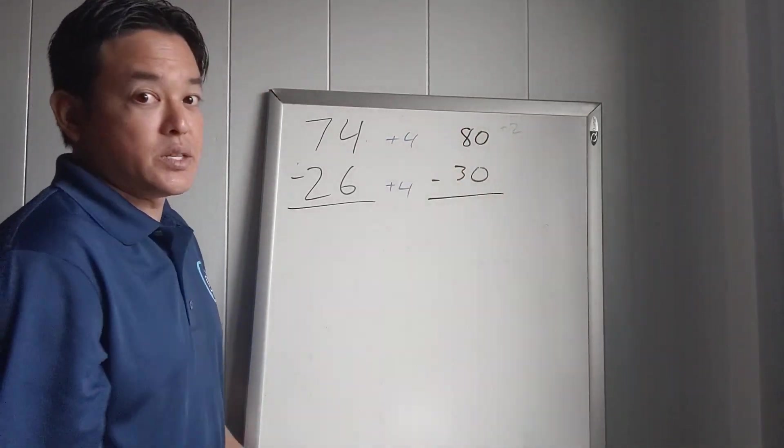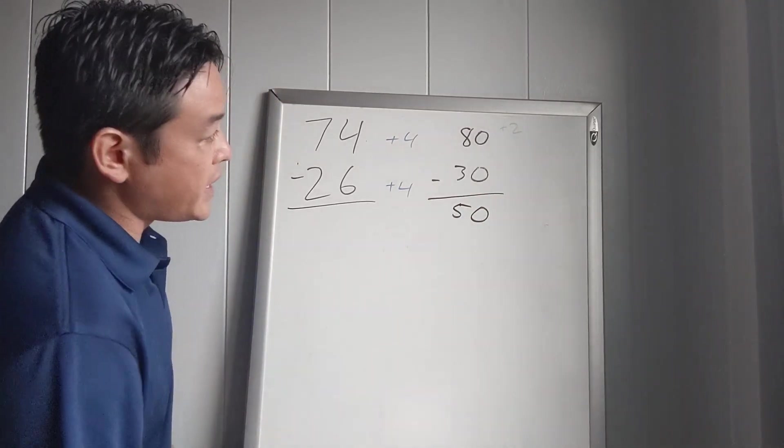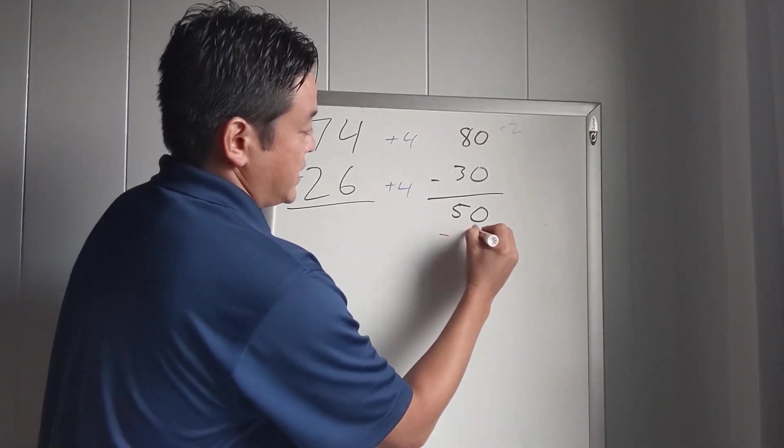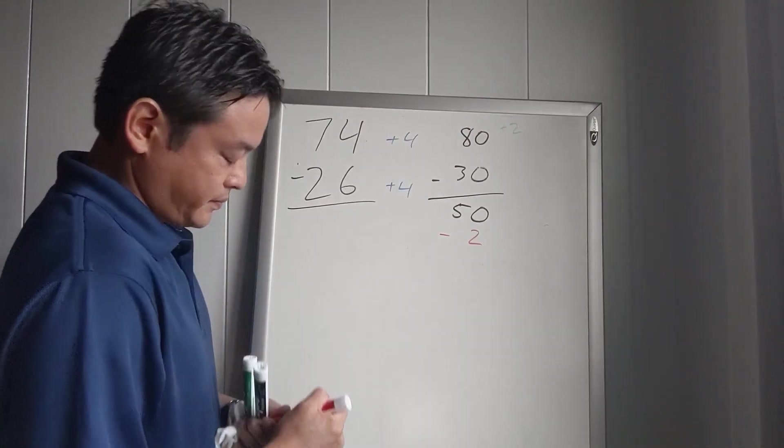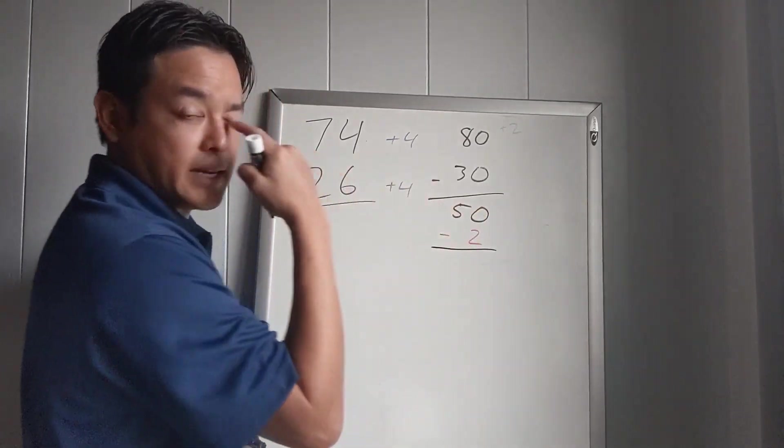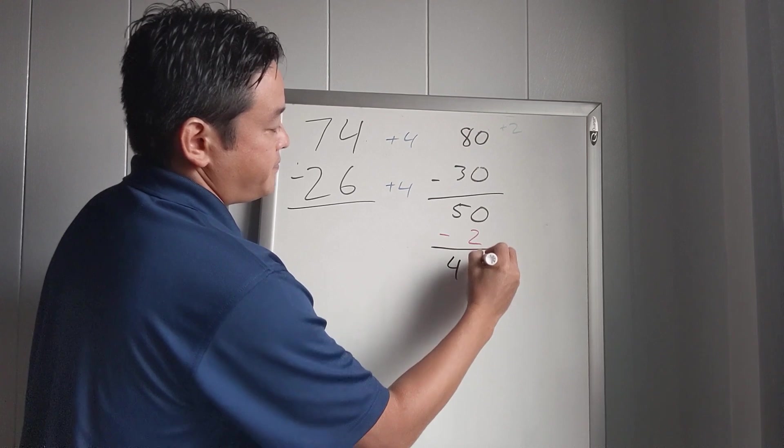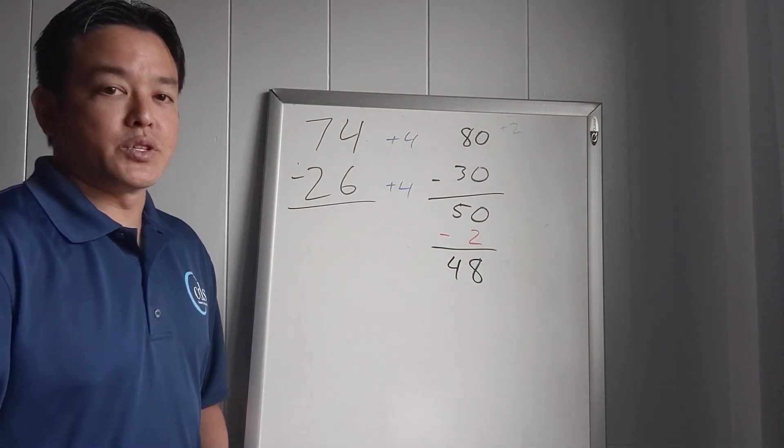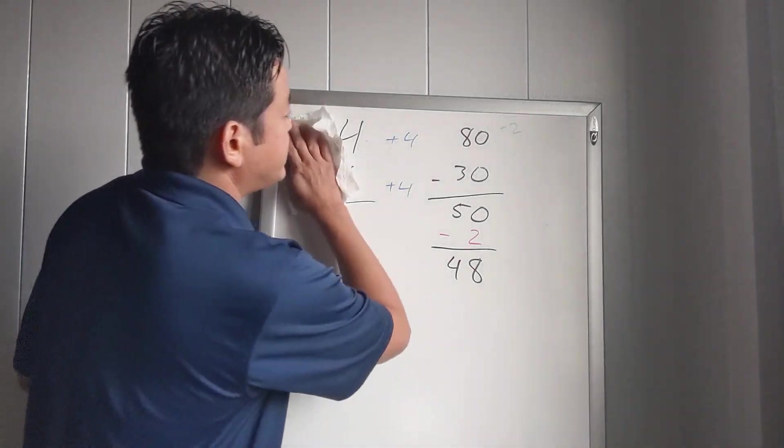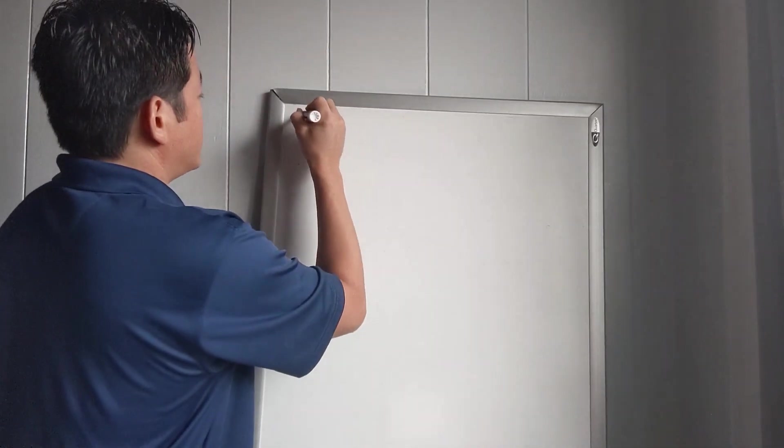Well, 80 minus 30 is an easy problem—that would be 50. But because we added 2 up here to finish the problem, we have to subtract 2 at the end to keep it balanced. So because we added 2 but didn't add to the bottom, we have to subtract 2 at the end. So here, 50 minus 2 is 48. And that's how you do Ember's Method.